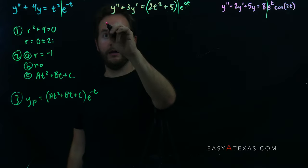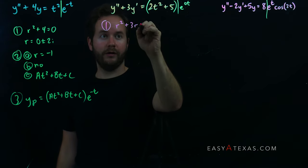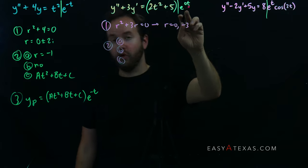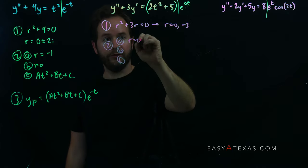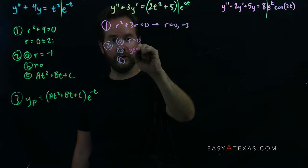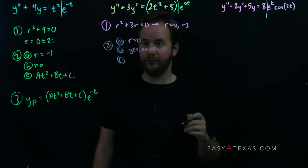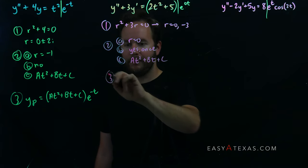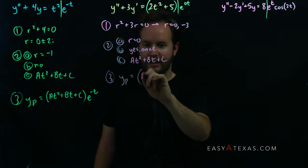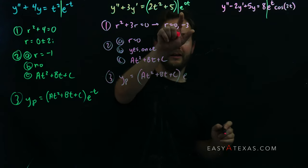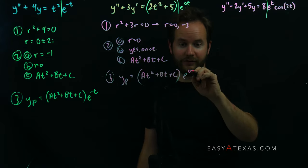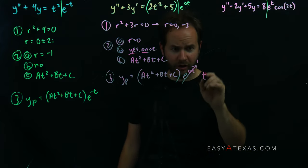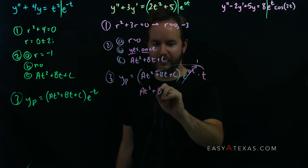Second problem: y'' + 3y' = t²·e^(0t) (i.e., just t²). Characteristic polynomial r² + 3r = 0 gives roots r = 0 and r = −3. Step 2a: r = 0 (since the right side is e^(0t)). Step 2b: yes, it matches once (r = 0). Step 2c: degree-2 polynomial, at² + bt + c. Because it matched once, tack on an extra factor of t: yp = t·(at² + bt + c) = at³ + bt² + ct.